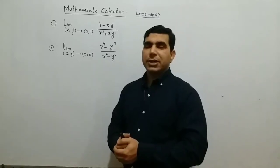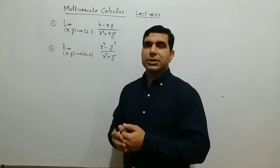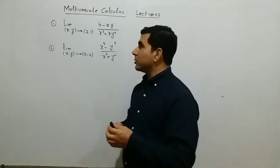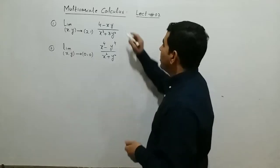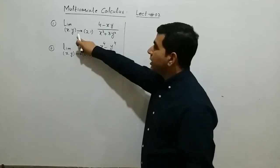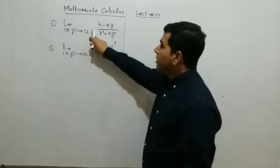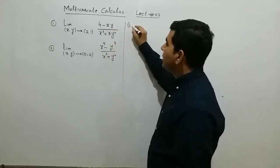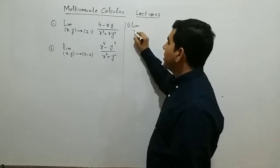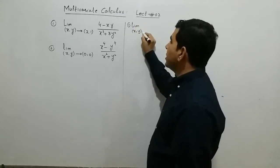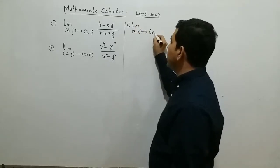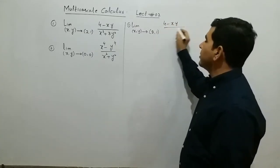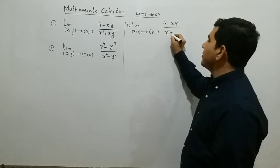Multivariate calculus course, lecture number two. Today we will discuss the limit of a function of two variables. We will solve two problems. First problem: limit as (x, y) approaches (2, 1) of 4 minus x·y divided by x squared plus 3y squared.